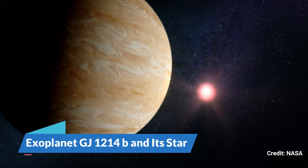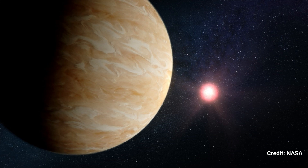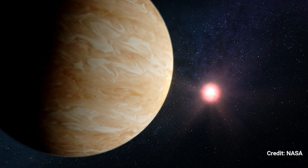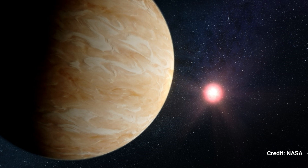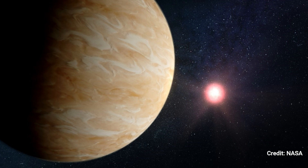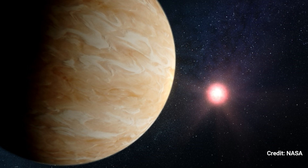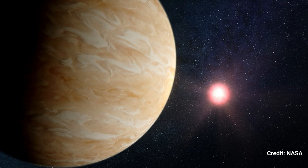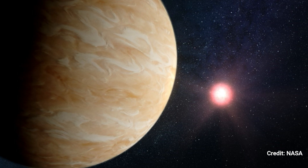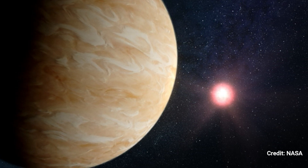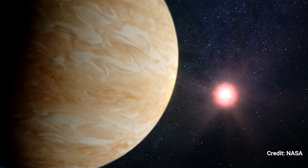Exoplanet GJ 1214b and its star: based on existing data, this is an illustration of what exoplanet GJ 1214b could look like. GJ 1214b is a warm, sub-Neptune-sized exoplanet about 48 light-years from Earth and is one of the galaxy's most researched exoplanets. Previous spectroscopic investigations show that the planet is enveloped in aerosols, clouds, or haze, making it impossible to establish the composition of gases in its thick atmosphere. This picture is based on our understanding of the planet and its host star, as well as assumptions about the atmosphere's potential features. Webb's spectroscopic data will aid in our understanding of the gases and aerosols that make up the planet's atmosphere.